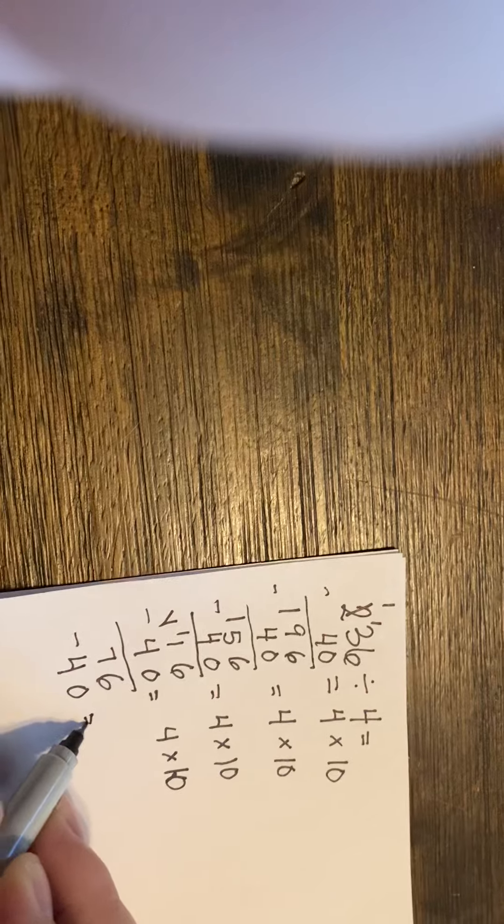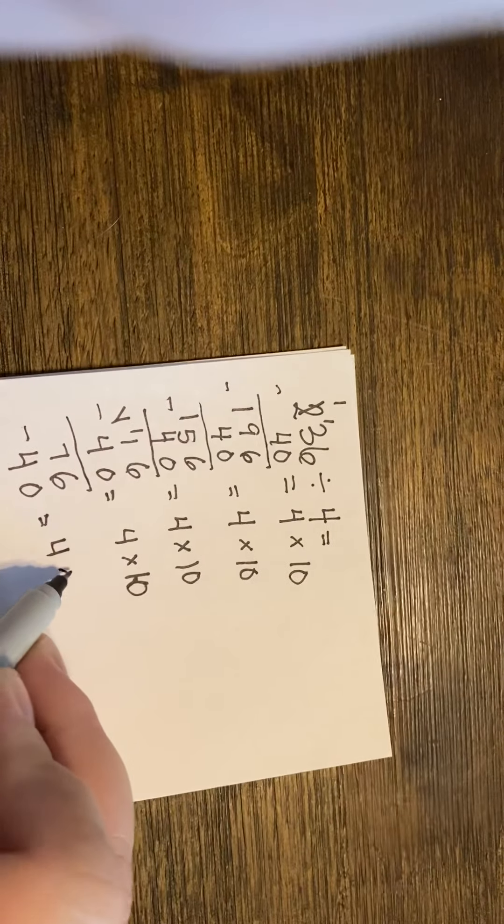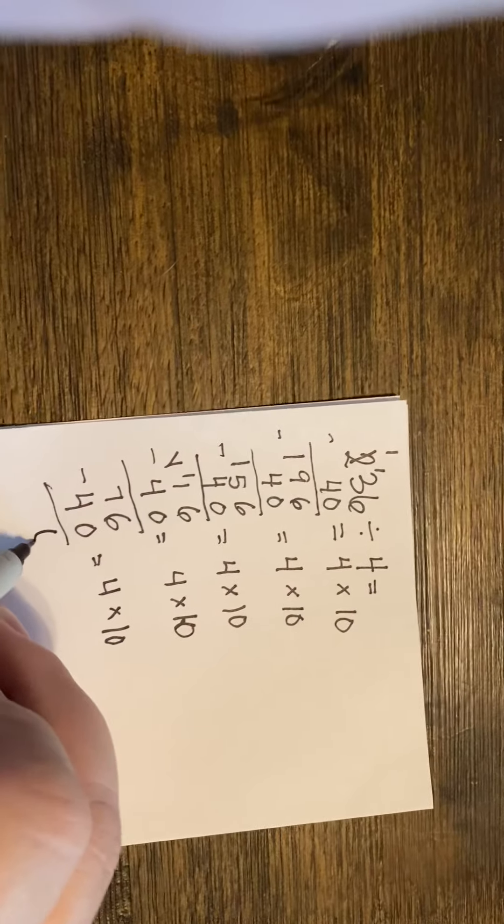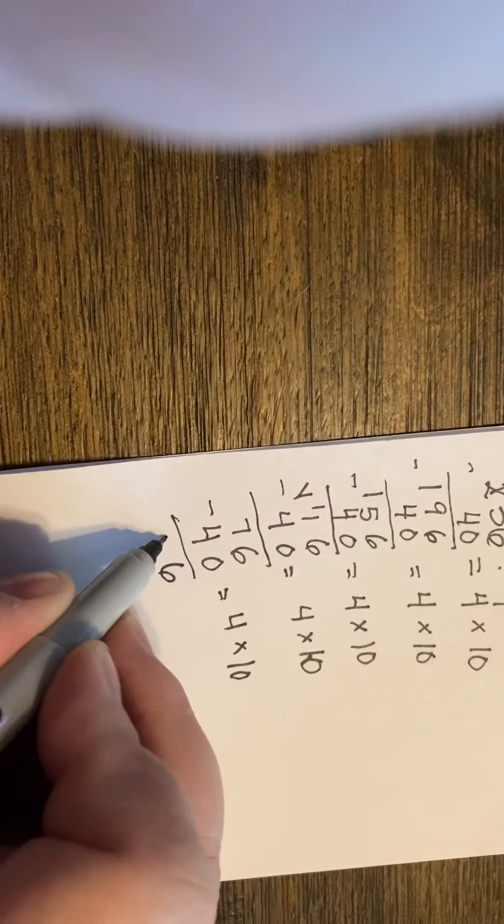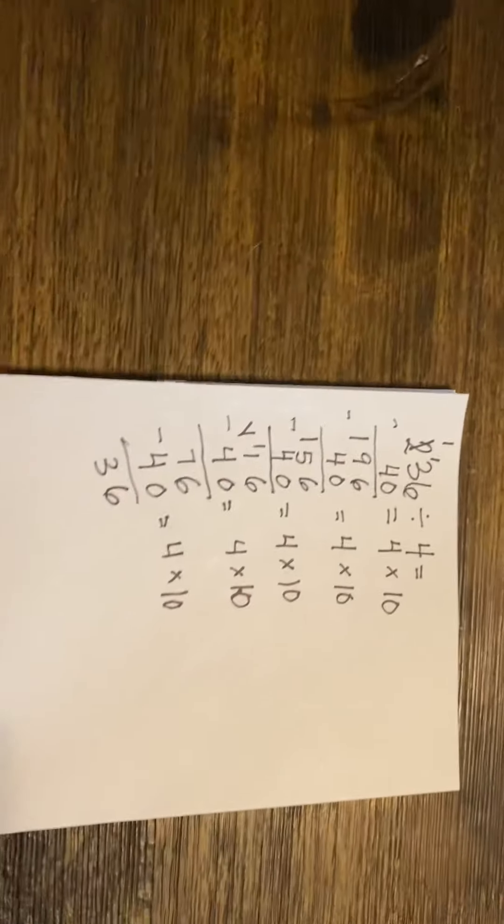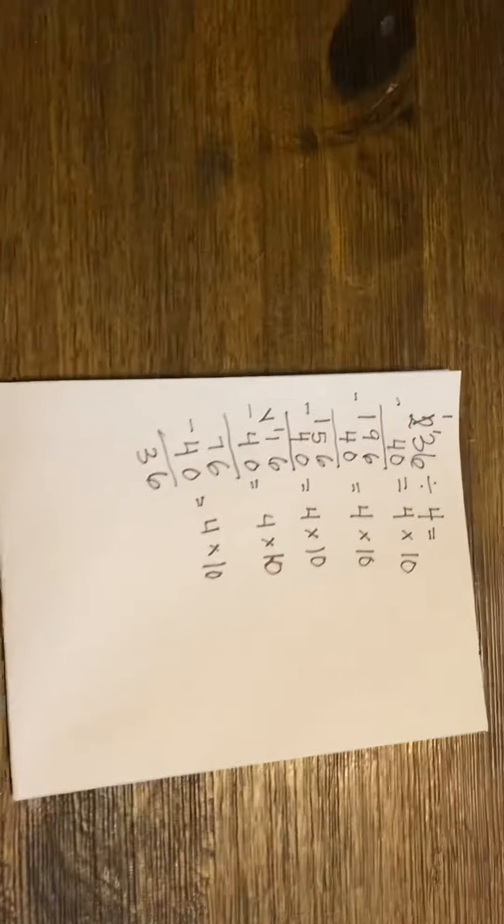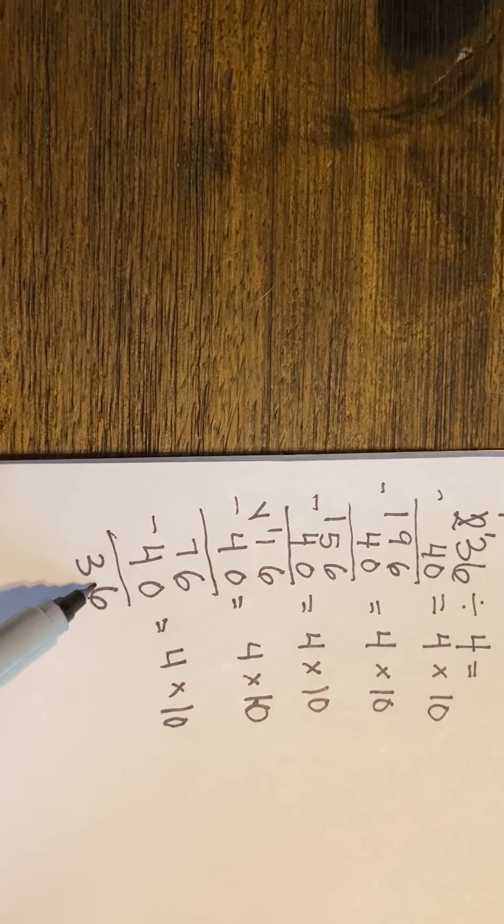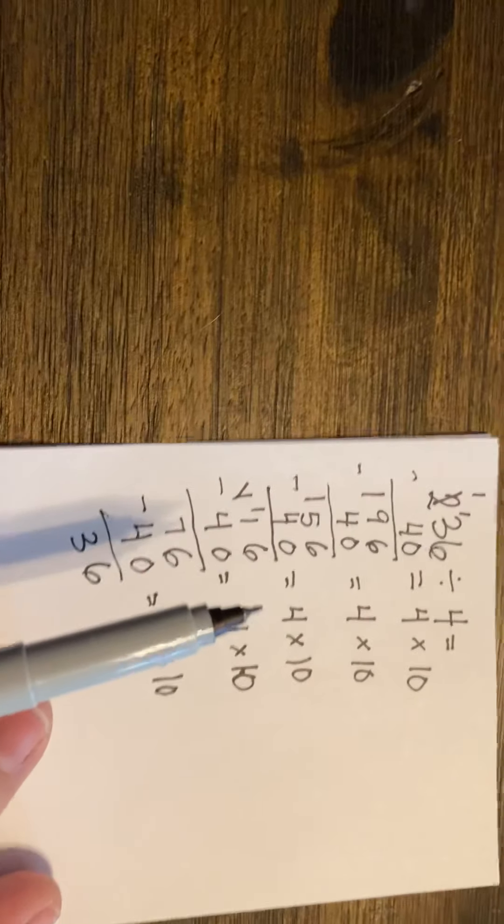And again, we know this is 4 times 10. Let's take that away. That's going to be 6, and then 3. Okay, so now we're getting to where we can't take another 40 out, because we only have 36 left.